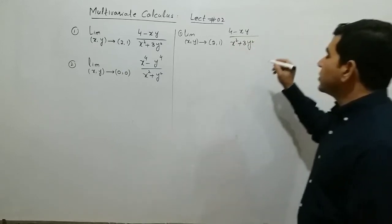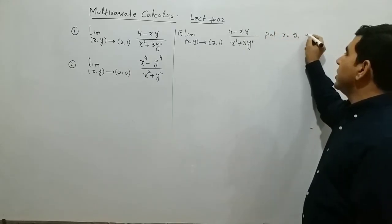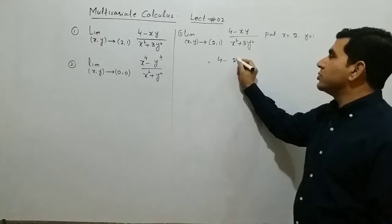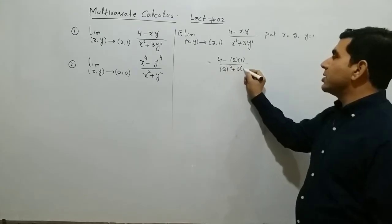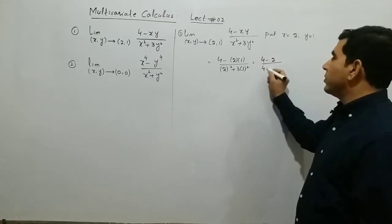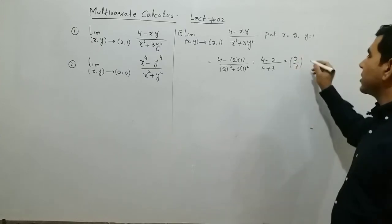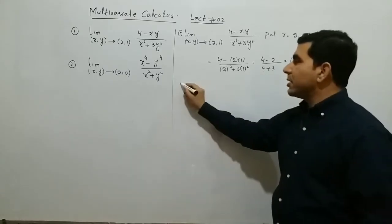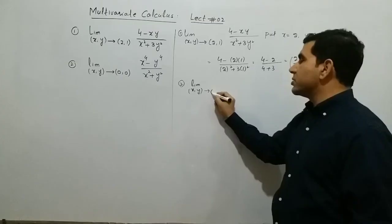Put x equal to 2 and y equal to 1. We get 4 minus 2 times 1, divided by 2 squared plus 3 times 1 squared. This becomes 4 minus 2, over 4 plus 3, which is 2 over 7. This is our required answer.